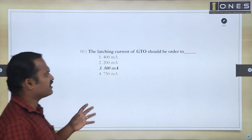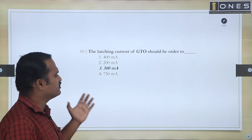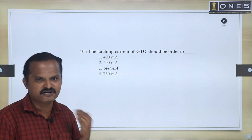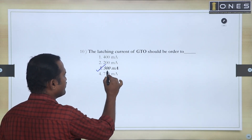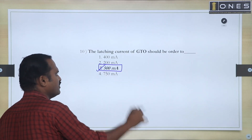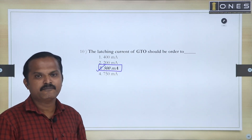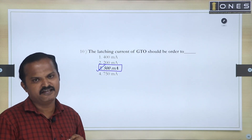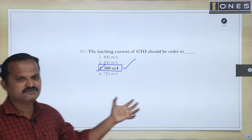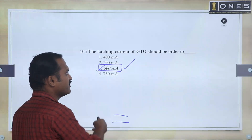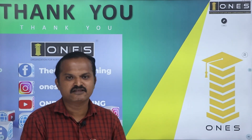Last question: The latching current of a GTO. To turn on a GTO, we need to apply a minimum current in the range of 500 milliamps. So the latching current — the minimum amount of current required to turn on the GTO — is 500 milliamps. That is the answer: 500 milliamps.